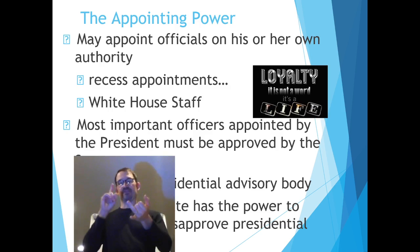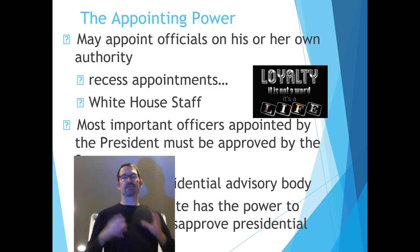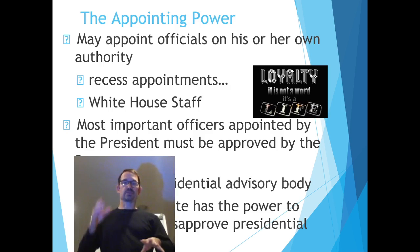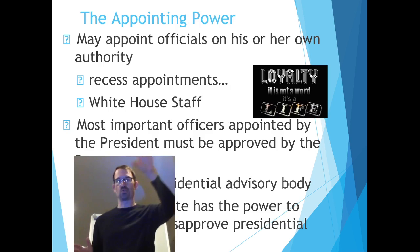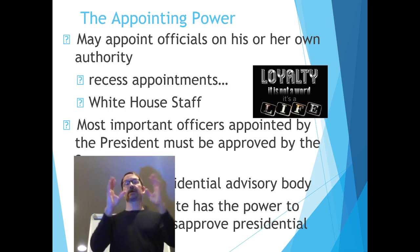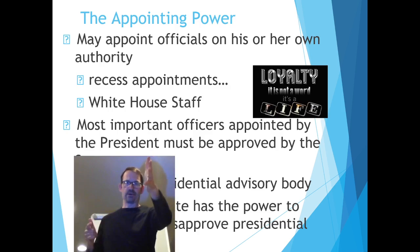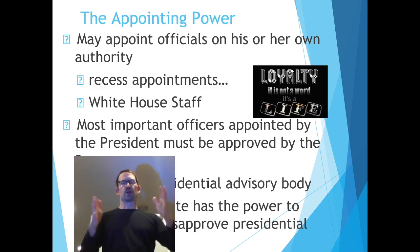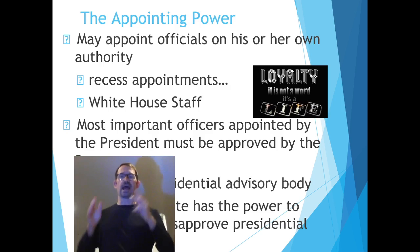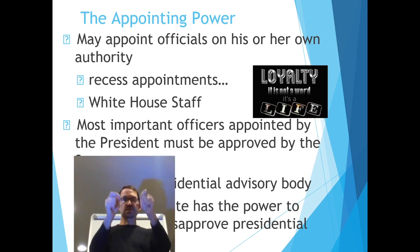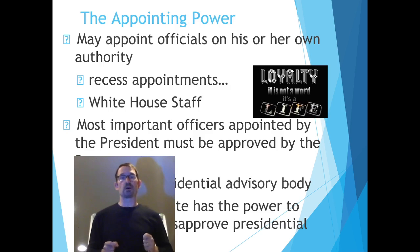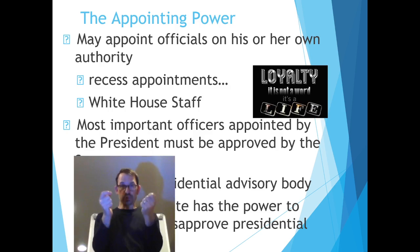White House staff can be hired directly, but most important officers appointed by the president must be approved by the Senate — every agency, bureau, administration, and cabinet position. The president appoints and the Senate approves. The most important thing the president considers when appointing someone to one of these offices is loyalty.